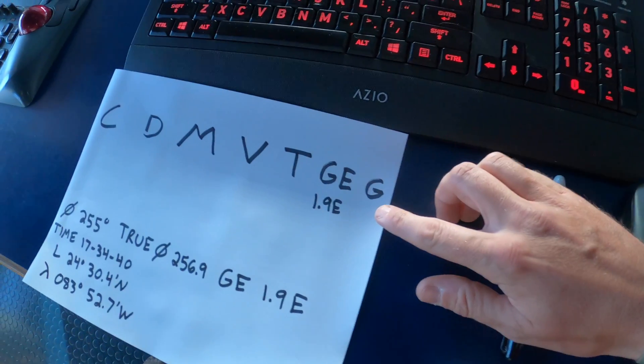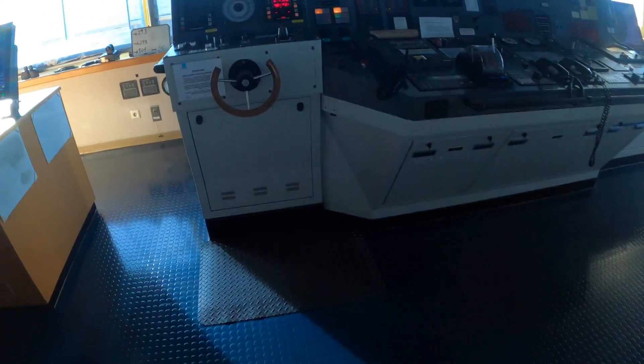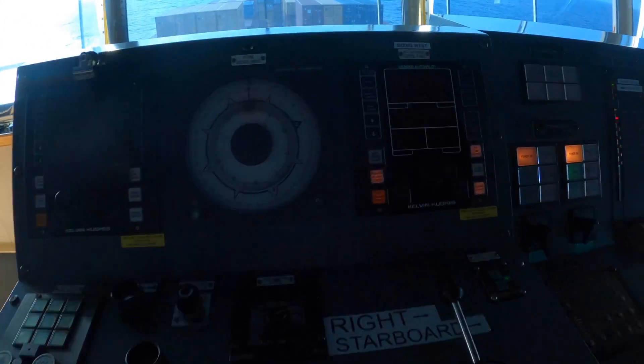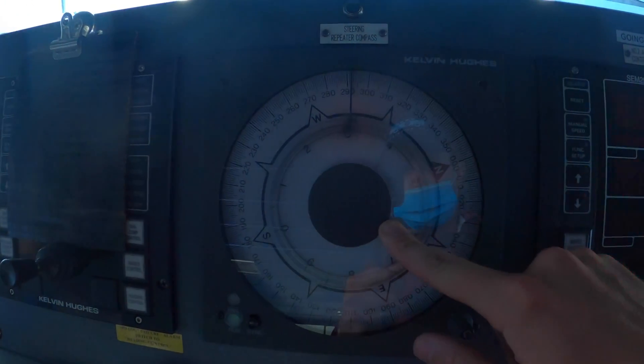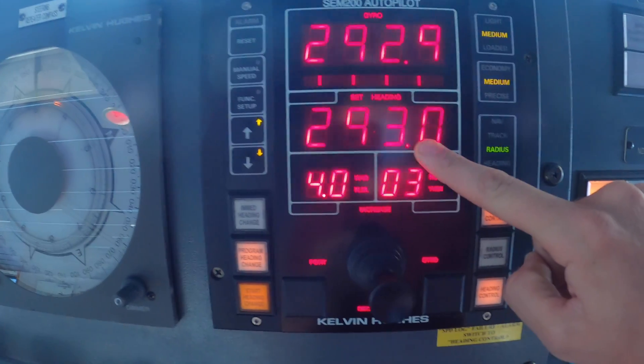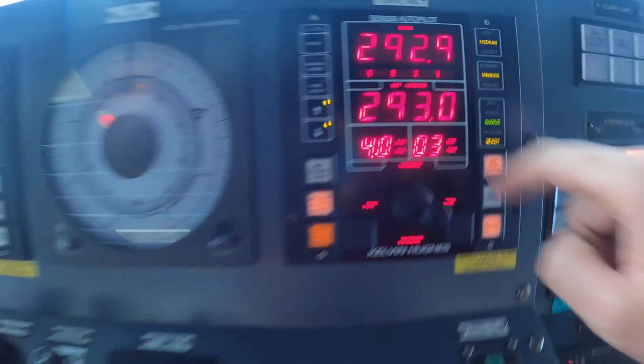So the G is our gyro heading. We come over and look at our gyro compass. So we have an analog version of this and a digital version. Our gyro heading is 293 degrees.